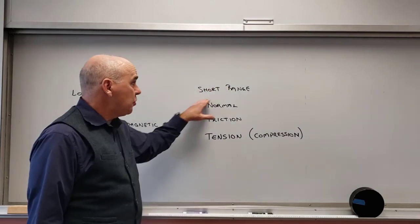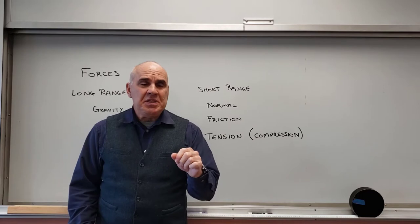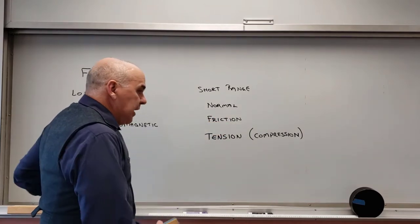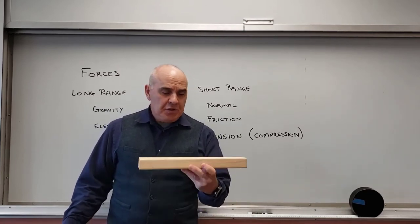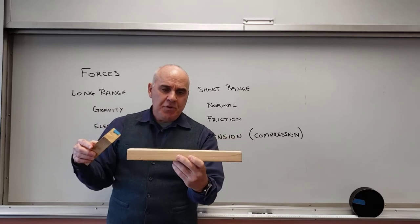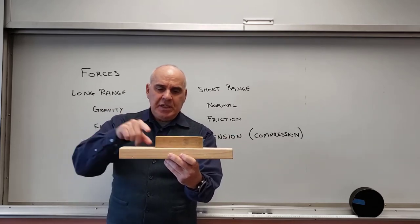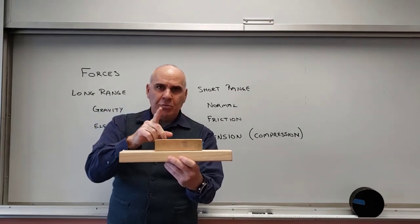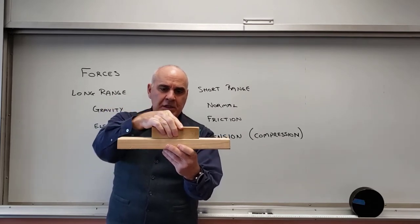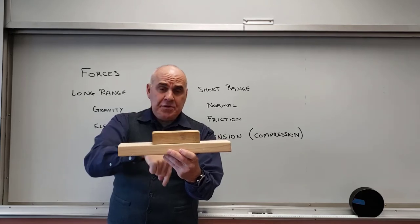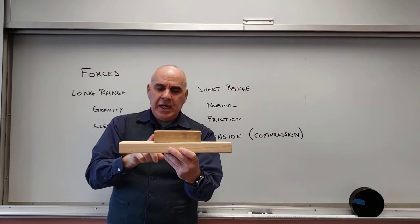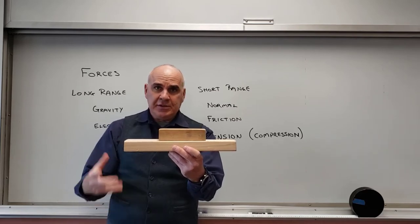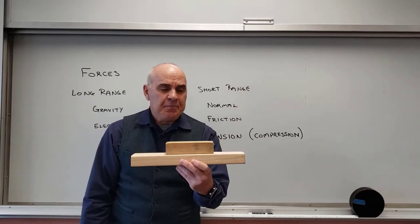The other kinds of forces I'll break down are all short-range forces. That means it must be touching — one thing must be touching another thing. The first of those is referred to as a normal force. A normal force, as the name implies, means perpendicular. So if I've got a surface here — the big board is a surface — and I put a block on top of it, then the surface is exerting a force on the block perpendicular to that surface. The normal force is always perpendicular to the surface; you might recall that from mathematics.